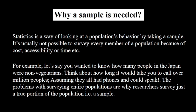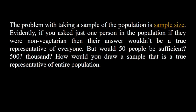The problems with surveying entire populations are why researchers survey just a true portion of the population — that is, a sample. The problem with taking a sample of the population is sample size. If you ask just one person in the population if they were non-vegetarian, their answer wouldn't be a true representative of everyone. But would 50 people be sufficient? 500? How would you draw a sample that is a true representative of the entire population?